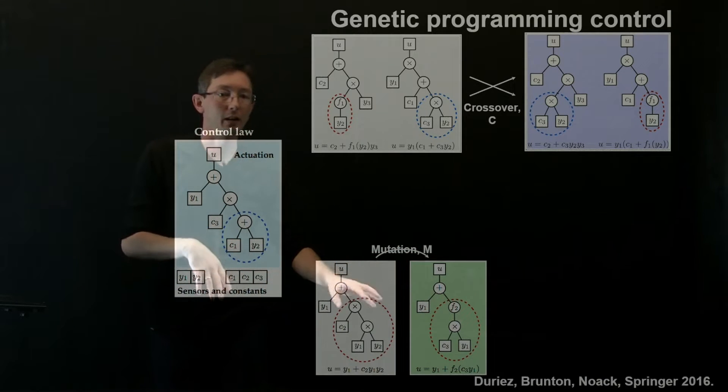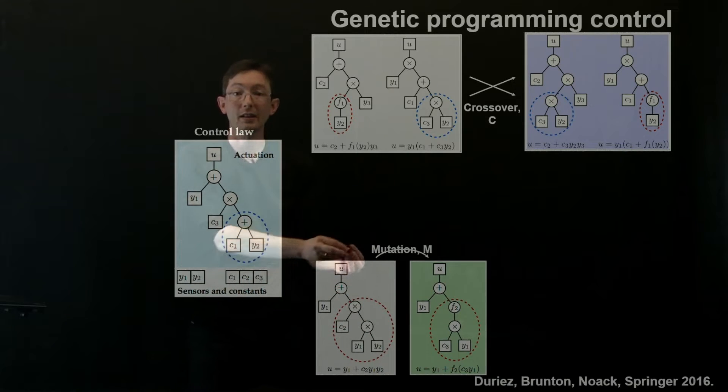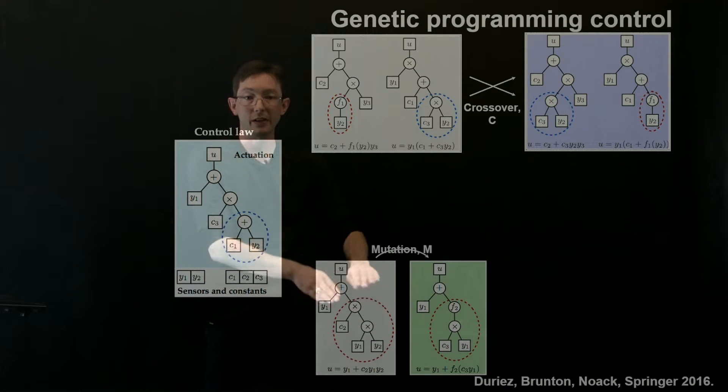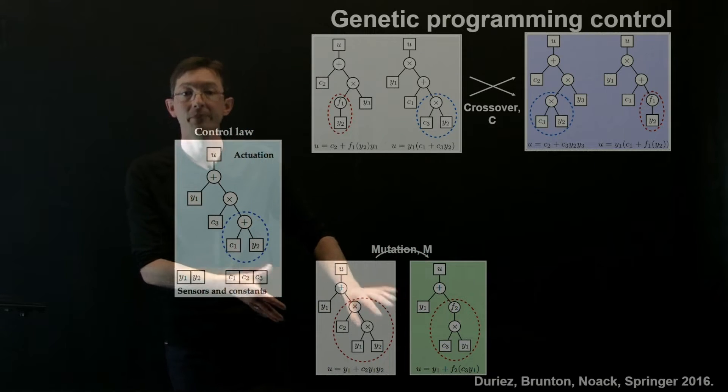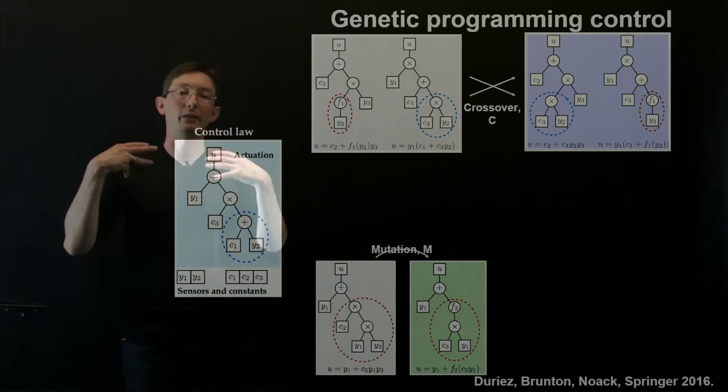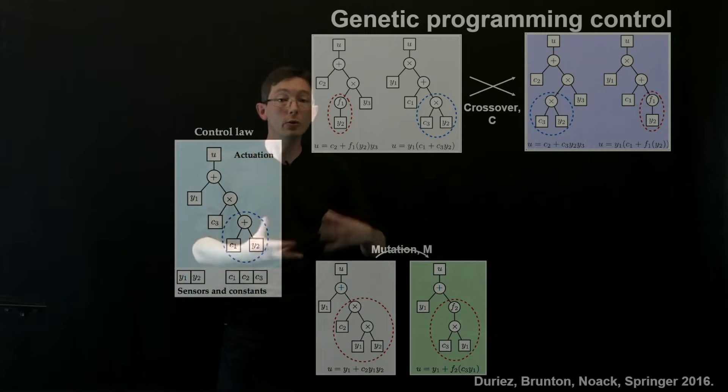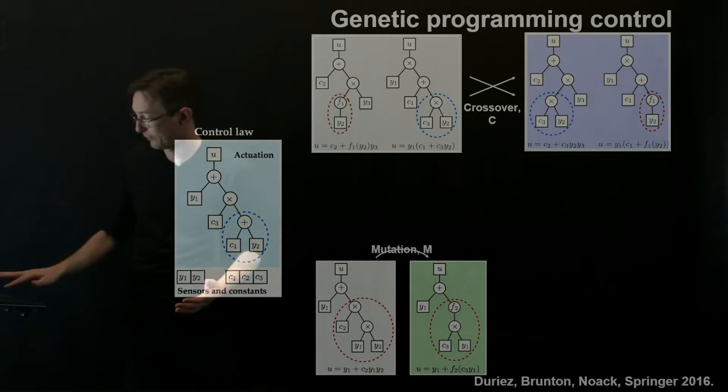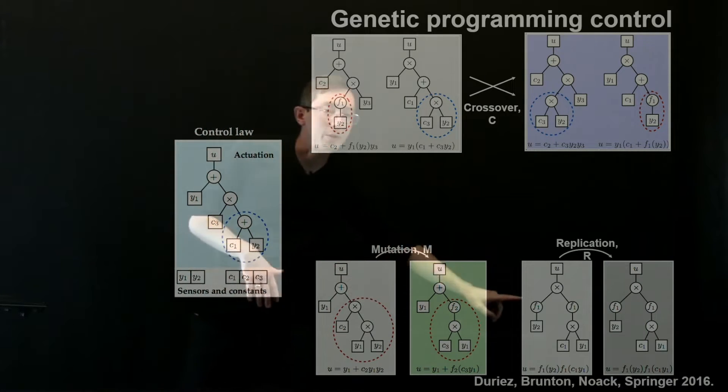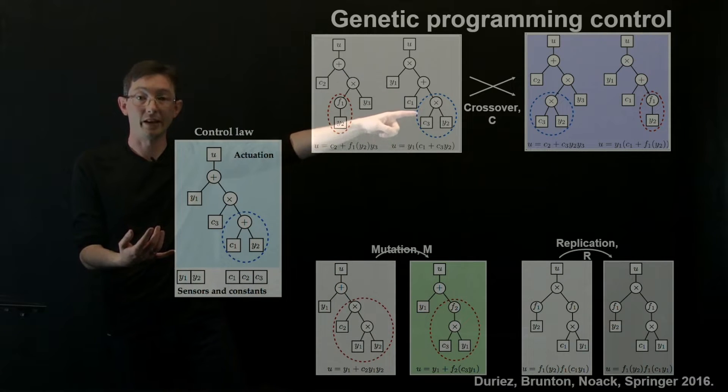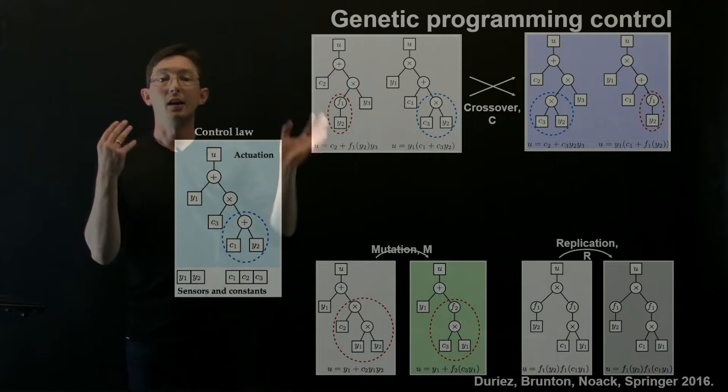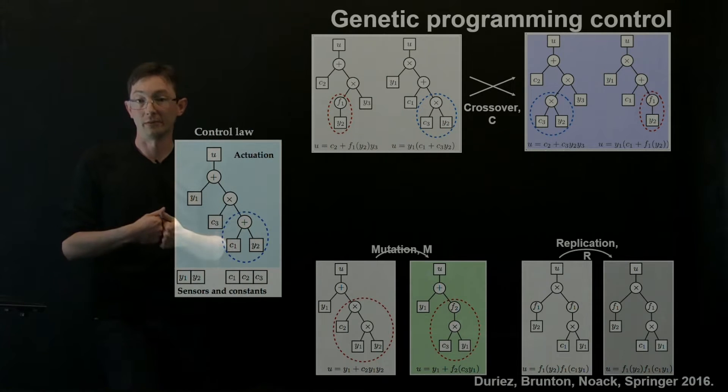I also have a mutation effect where I can take some random segment of this function tree and just snip it off and replace it with a randomly generated new subtree. That's mutation. This has the effect of exploring your parameter space more, trying new things that you hadn't tried before. And then as before you had this replication. So if a control law is good enough, maybe I just copy it to the next generation directly so that I don't lose that good information.